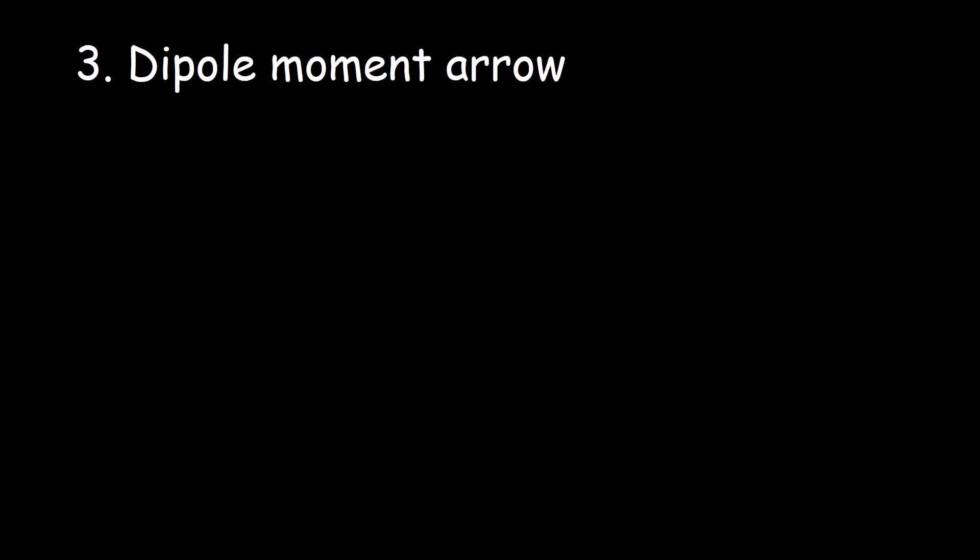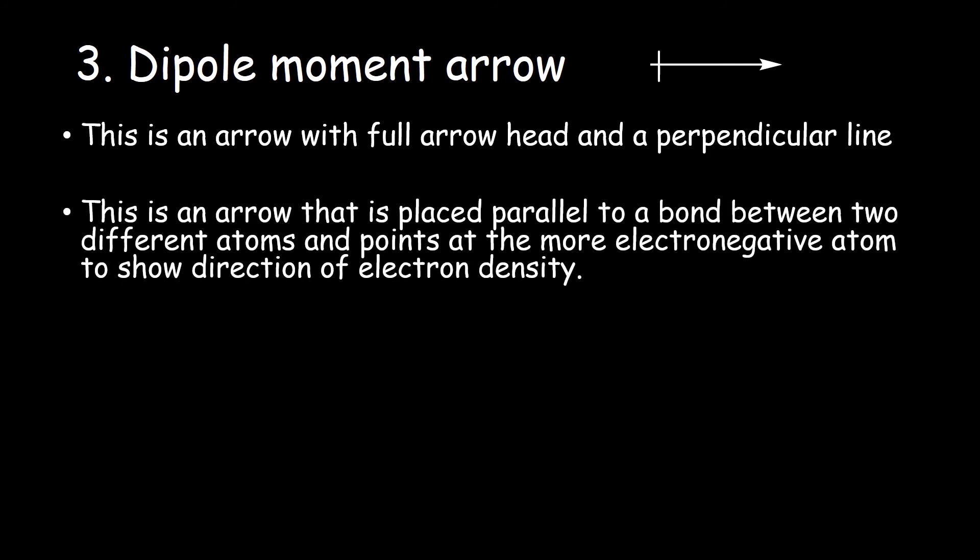Number 3. Dipole moment arrow. This is often referred to as a vector arrow. The arrow has a full arrow head and a perpendicular line close to the tail end. This is an arrow that is placed parallel to a bond between two atoms that are different and points at the more electronegative atom to show the direction of electron density.